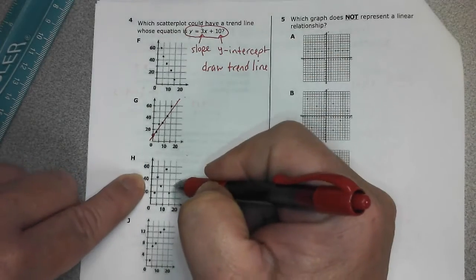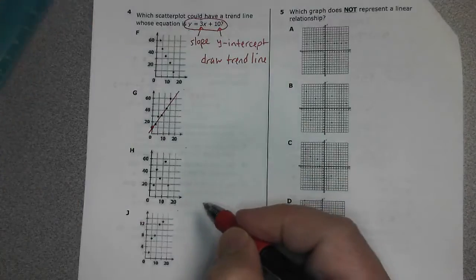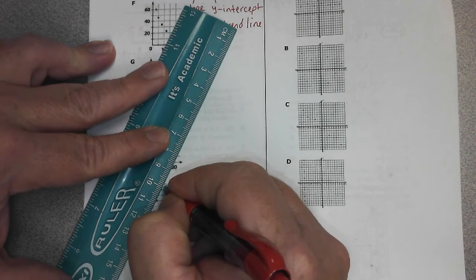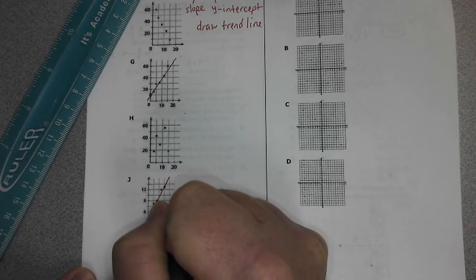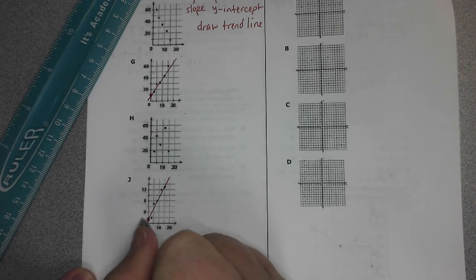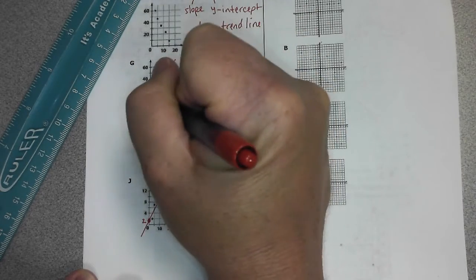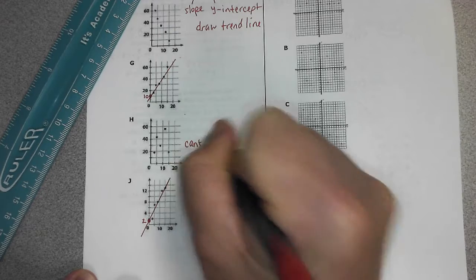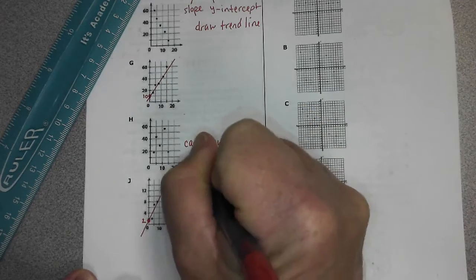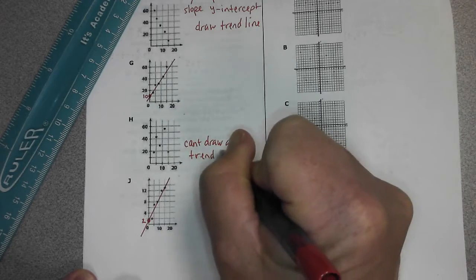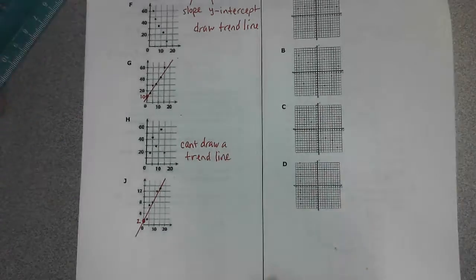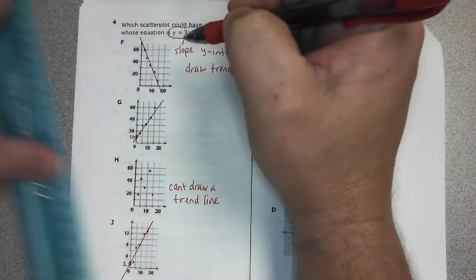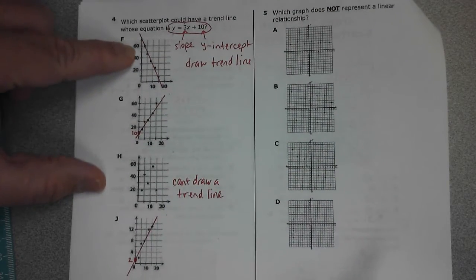You can't draw a trend line for answer choice H because the points are too scattered. For answer choice J, you can draw a trend line, but for F when you draw your trend line it does not cross at 10 — it crosses much higher, at over 60. So the correct answer has to be G.